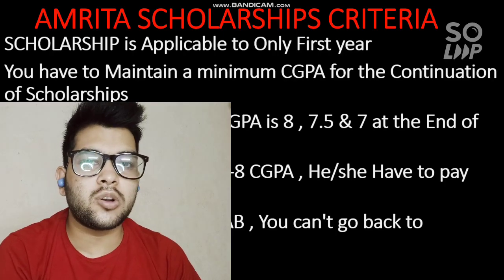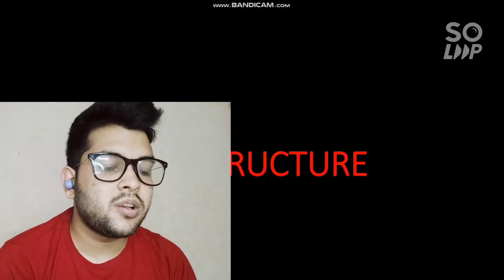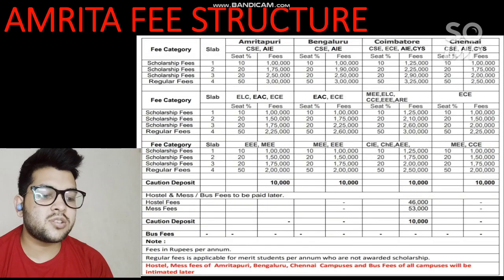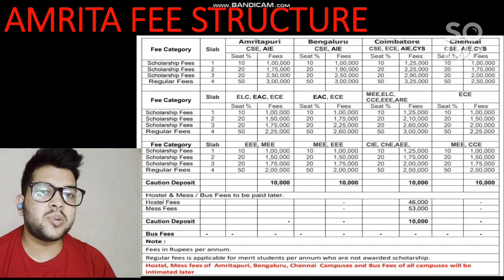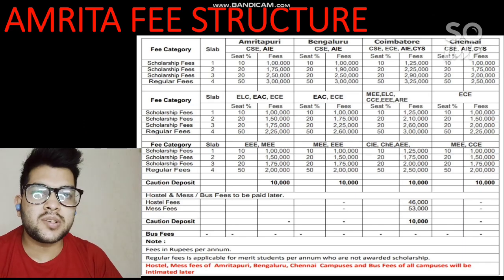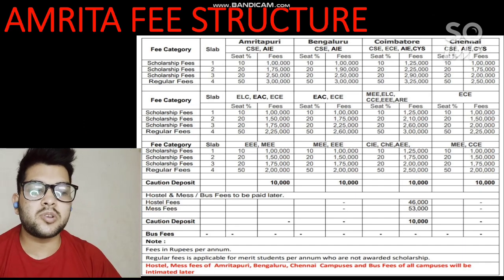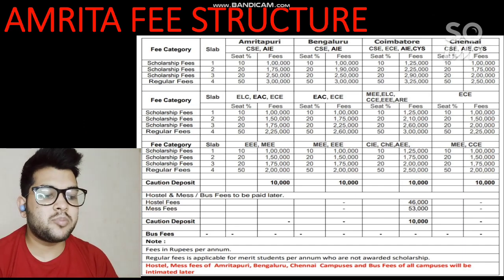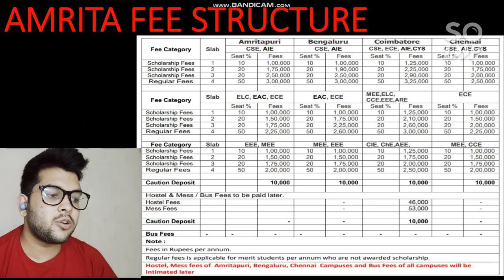Now I will talk about the fee structure and the refund policy. For Slab 1, only 10 percent of seats are reserved in each campus and each branch. This is very important information — for Slab 1, only 10 percent of seats are reserved. For Slab 1, you have to pay only one lakh fee for the Amrita Coimbatore and Bangalore campuses.